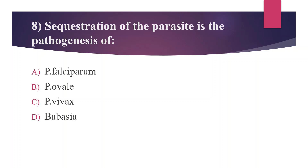Entamoeba histolytica causes amoebiasis, Toxoplasma gondii causes toxoplasmosis, and Trichomonas vaginalis causes trichomoniasis. Eighth question: Sequestration of the parasite is a pathogenesis of — Option A: Plasmodium falciparum, Option B: Plasmodium ovale, Option C: Plasmodium vivax, Option D: Babesia. The answer is Option A, Plasmodium falciparum. Sequestration means mature infected erythrocytes adhere to postcapillary and capillary venular endothelium. Infected erythrocytes contain late development stages — trophozoites and schizonts. This is the characteristic of Plasmodium falciparum infection.